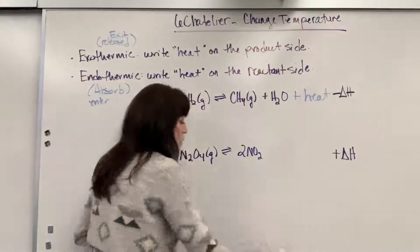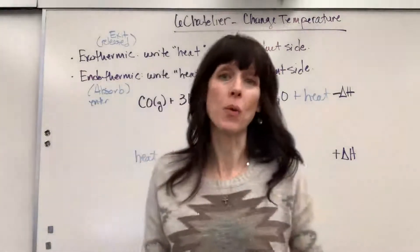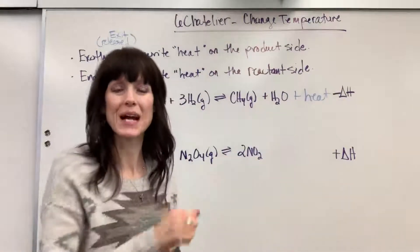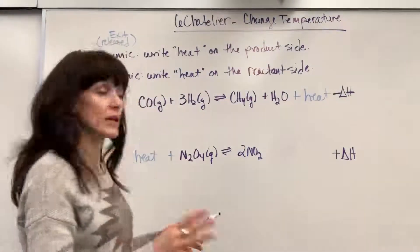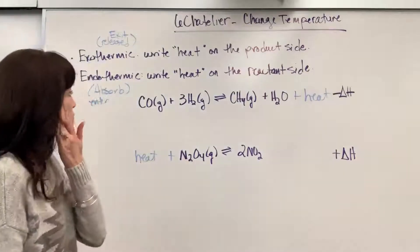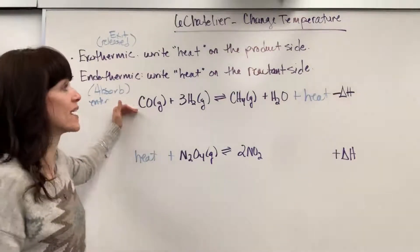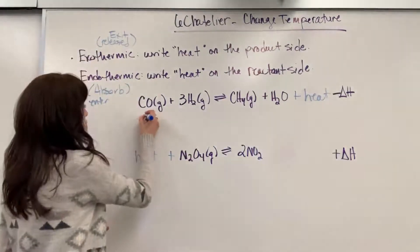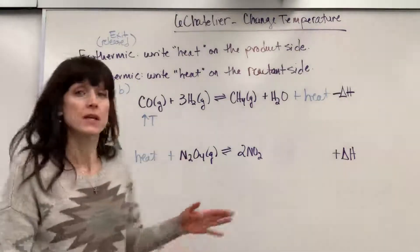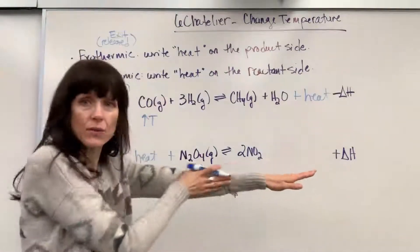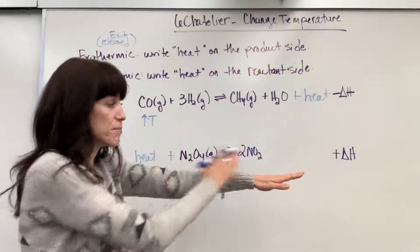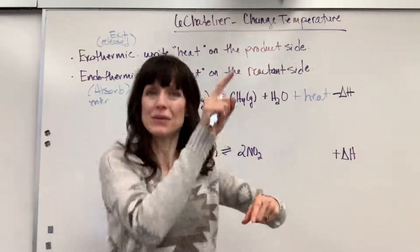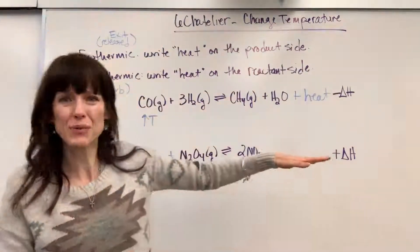Once you've written the word heat, treat it like a concentration, and we're going to use that teeter-totter model that we used with concentration. Let's look at our exothermic reaction. Let's say that we increase the temperature. We begin at beautiful equilibrium — the teeter-totter balanced on both sides. Equilibrium is when the forward rate equals the reverse rate.